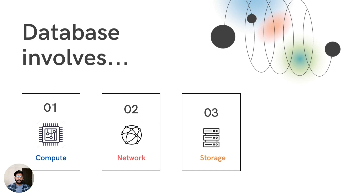Let's simplify. A database is an application. An application is essentially a combination of compute, networks, and storage. Its code needs a place to run. It must be able to communicate with other devices and requires a location to store data — which a database requires just as well as any other application.